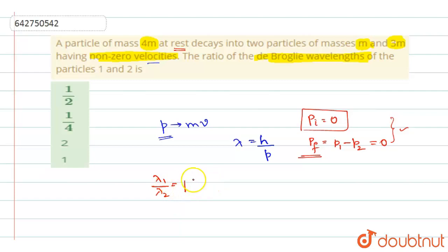If they are equal and opposite, now they cancel each other and you will get lambda 1 by lambda 2 ratio as 1. So you have option 4 as the right answer.